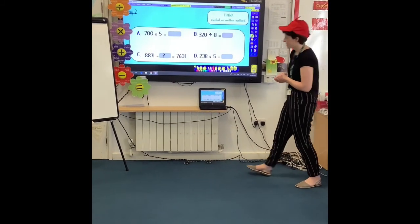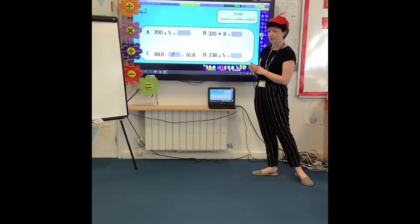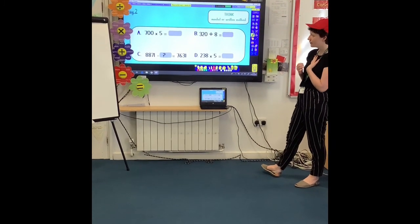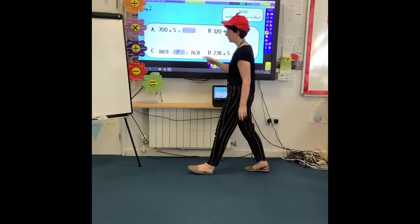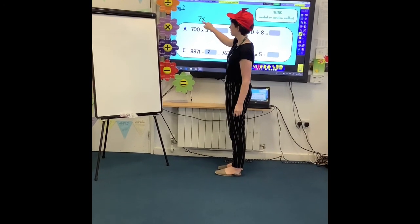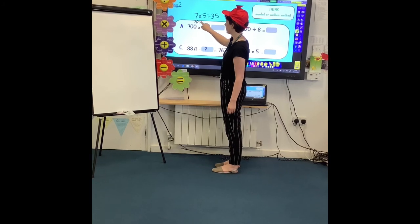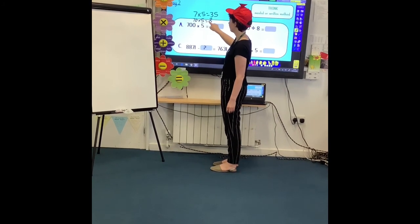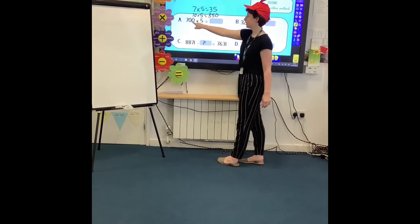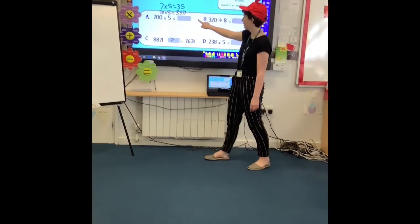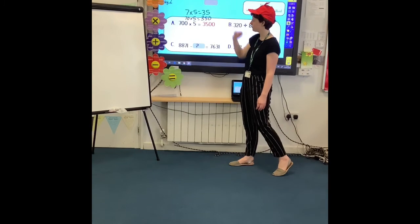So let's now go through the answers together. So first one, 700 times five. How did you decide to do this one at home? Personally, I would have done a mental calculation because I know that seven times five is 35. 70 times five is 350. And because 700 is 10 times bigger than 70, I know my answer is going to be 10 times bigger. So the answer is 3,500.